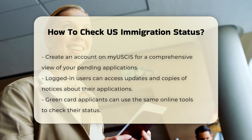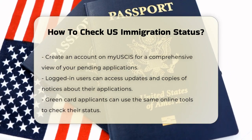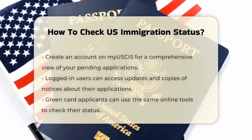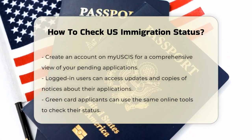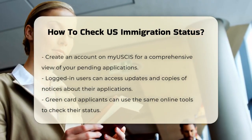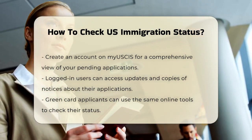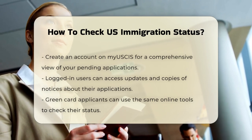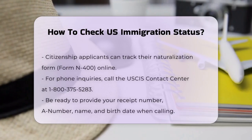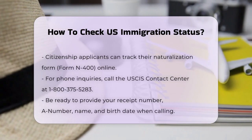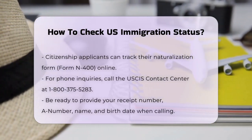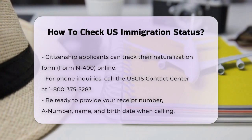If you applied for a specific type of visa, like a green card or citizenship, the process is similar. For green card applicants, you can use the same online tools to check your status. For citizenship applicants, you can use the USCIS Case Status Online Tracker or log into your My USCIS account to see updates on your naturalization form, Form N-400.